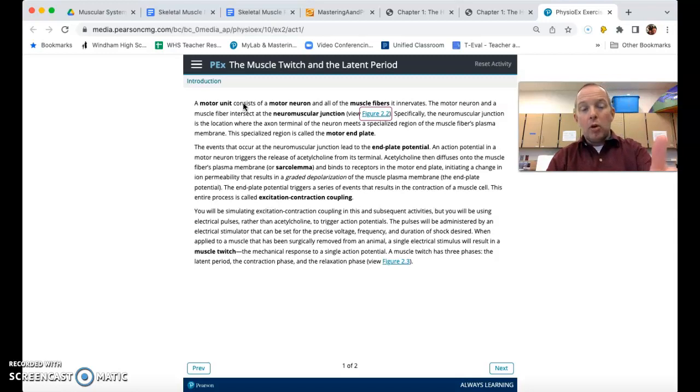So a motor unit, as we can see here, consists of a motor neuron, and we remember that motor neurons send impulses out away from the CNS, generally to a muscle or a gland, and all of the muscle fibers that it innervates, that it controls.